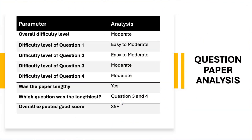Talking about the overall question paper analysis, the difficulty level of the paper was moderate. Question 1 was found to be easy to moderate. Question 2 again easy to moderate. The difficulty level of questions 3 and 4 was moderate. Overall, the students found the paper to be lengthy and questions 3 and 4 were the lengthiest. So overall, the students are expecting a good score of 35 plus in the 40 marks paper.